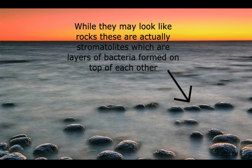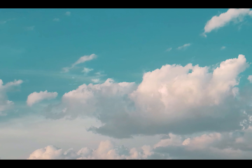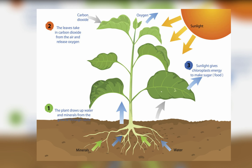Life began as simple single-cell organisms in hydrothermal craters and vents, where sources of energy were readily found. In this period, oxygen starts to build up in the atmosphere 3.5 billion years ago, due to the emergence of photosynthesis.